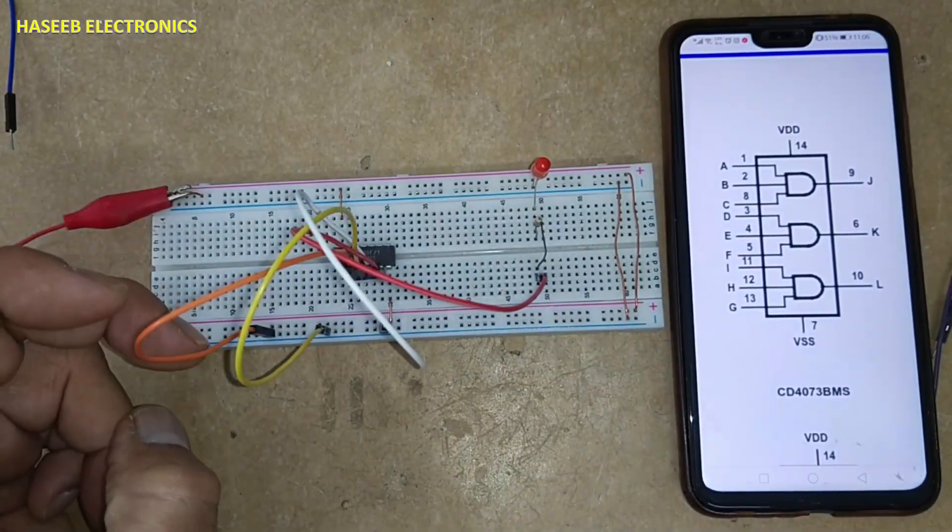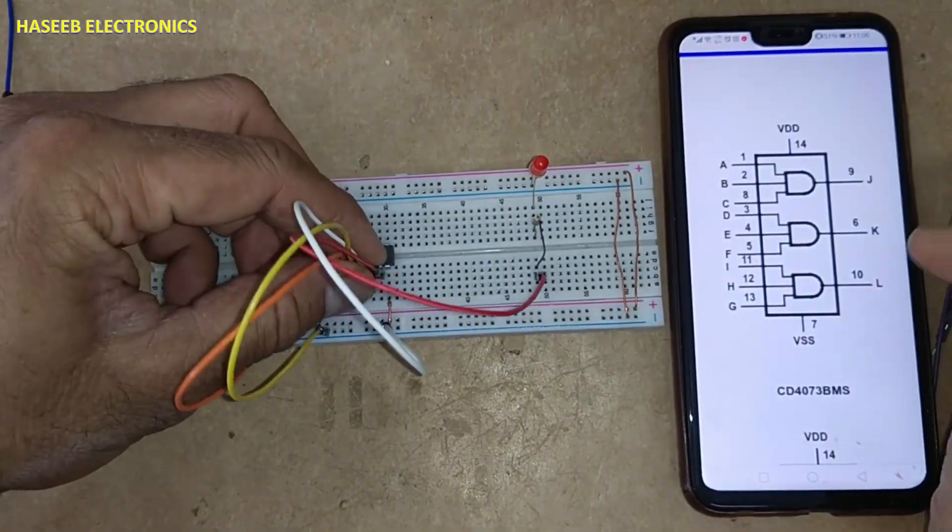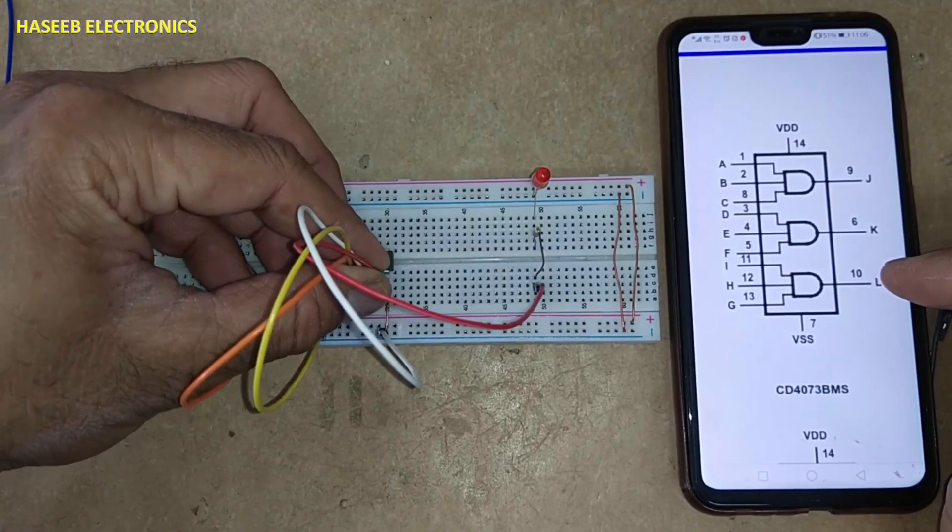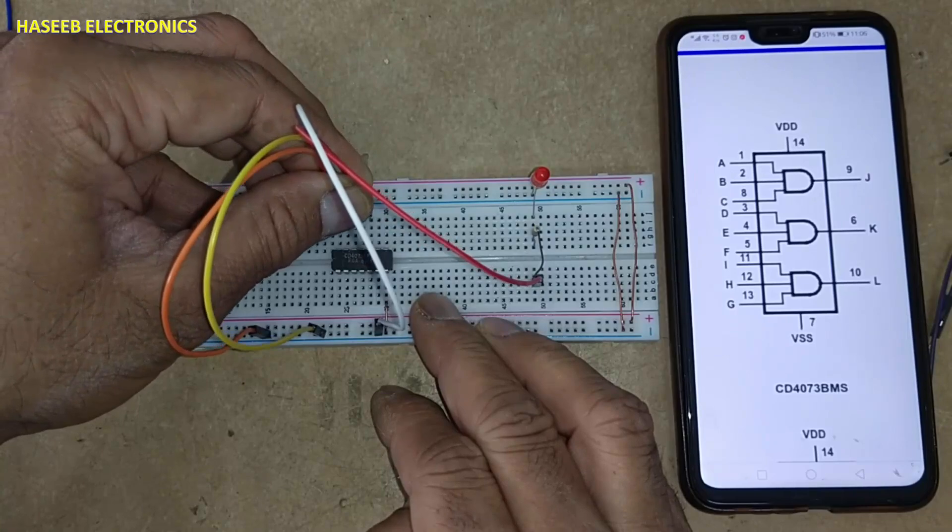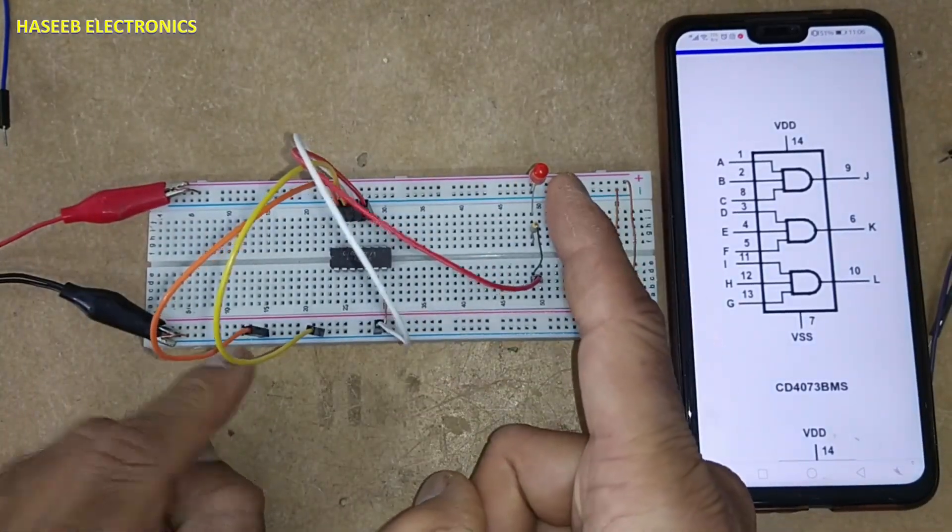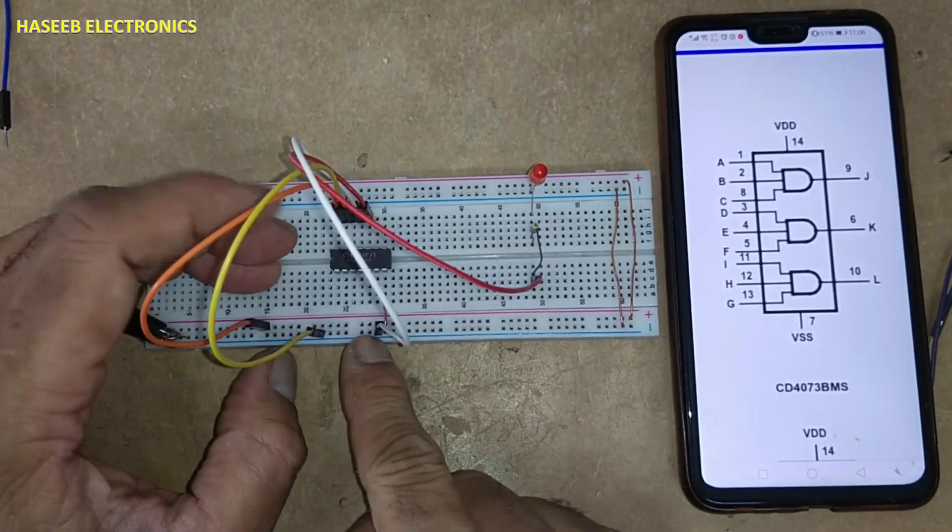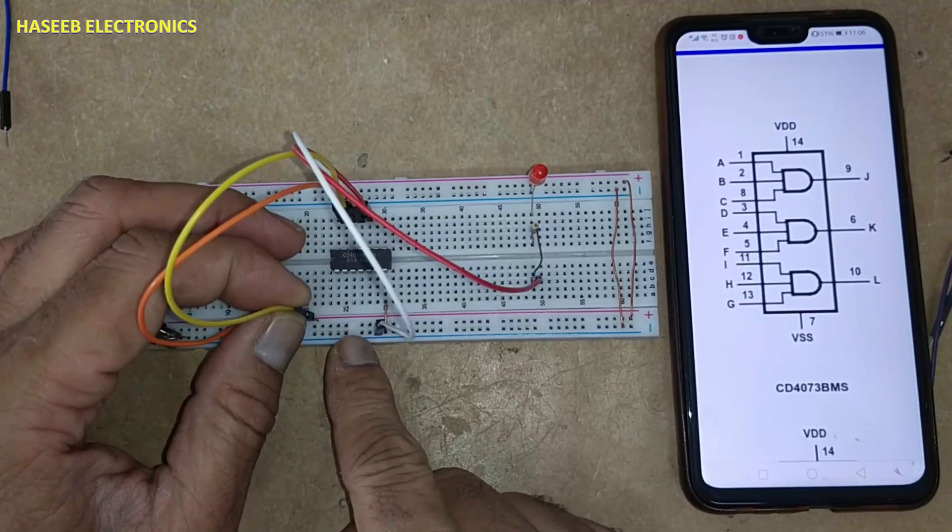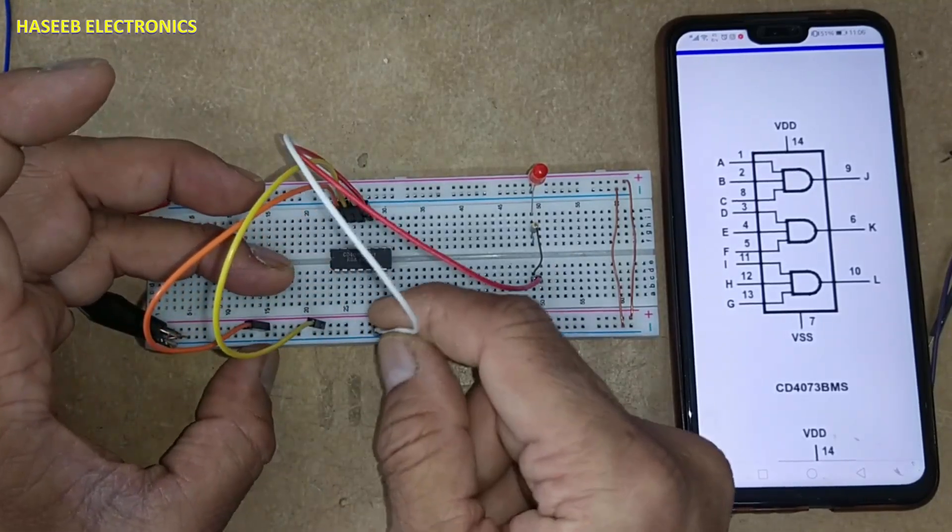Now checking the last gate, pin 10 is the output with inputs at pins 11, 12, and 13. With all inputs low, the output is low. With one input high and two low, the output is low. When any one input is low, the output is low.